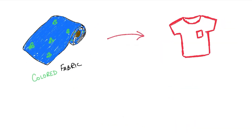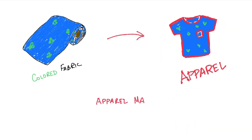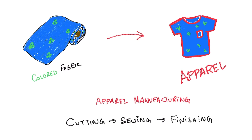Then by apparel manufacturing process, the colored fabric is converted to garments. First the fabric is laid on the cutting table and the different patterns or parts of the garments are cut. This process is called cutting. Then these cut panels are sewn together to form the garment. This process is called sewing.